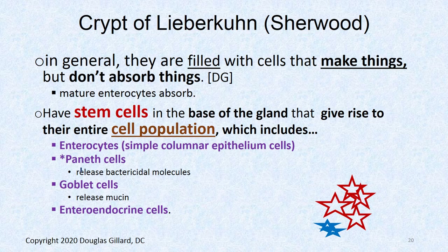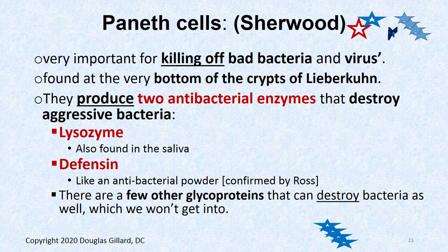The cell population includes enterocytes, Paneth cells, mature and immature enterocytes, goblet cells — which release mucin converted into mucus — and enteroendocrine cells. We need to talk about Paneth cells, especially when we get to Crohn's disease.